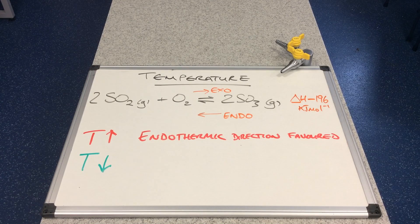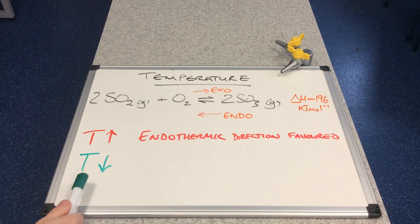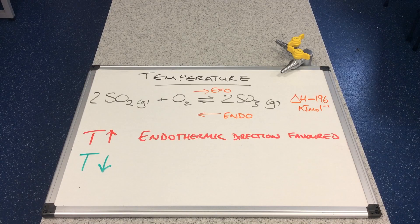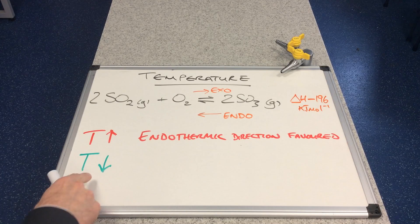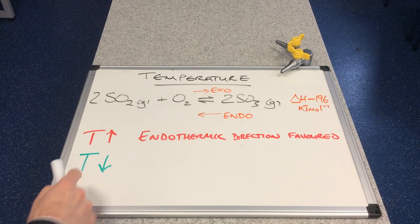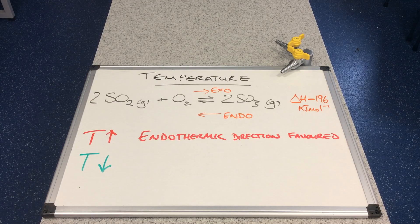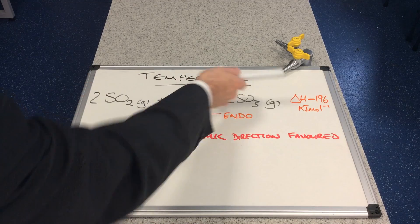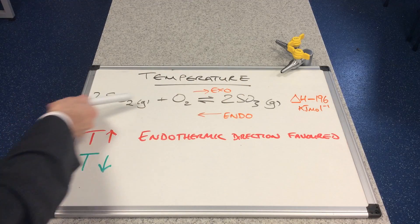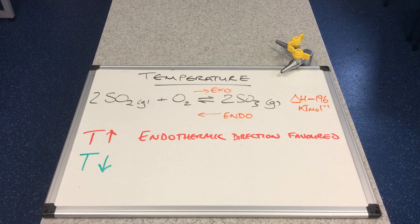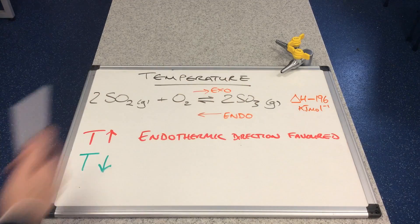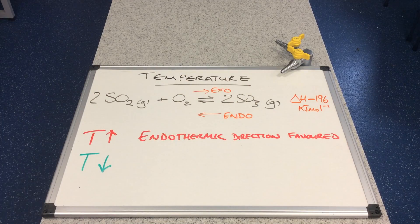Now the opposite: we lower the temperature. Le Chatelier's principle says the equilibrium wants to minimise that change, so if you cool it down it wants to heat back up again. The reaction that generates heat is the exothermic forward reaction. So if you lower the temperature, this equilibrium will proceed more in the forward exothermic direction and the equilibrium position shifts to the right.